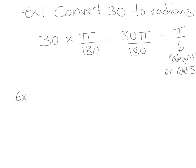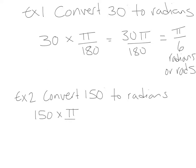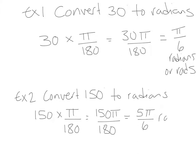Example 2: convert 150 degrees to radians. We have 150 times pi over 180. Simplifying the fraction, the biggest number that divides into both 150 and 180 is 30, so we're left with 5 pi over 6 radians.